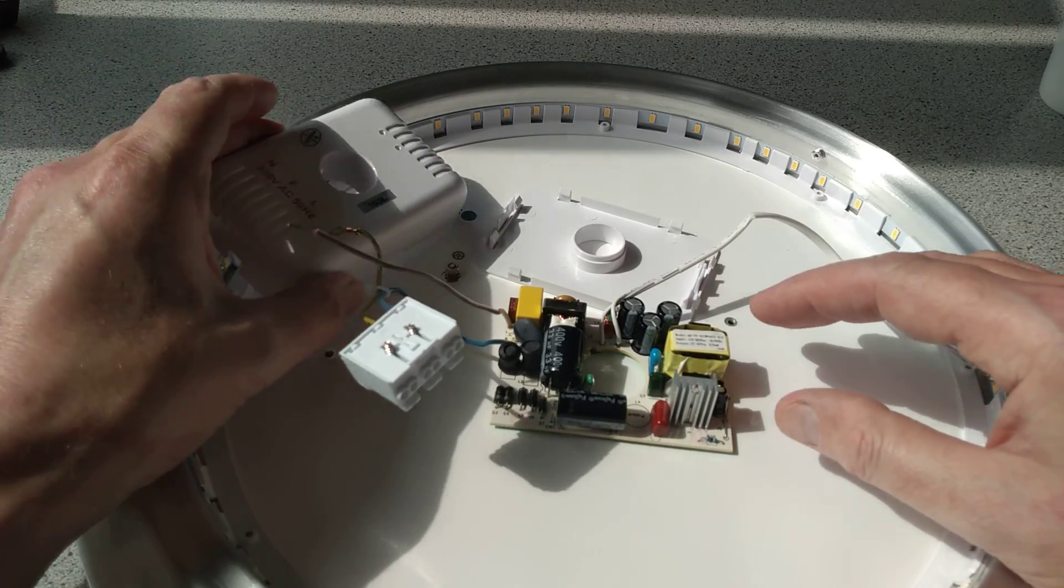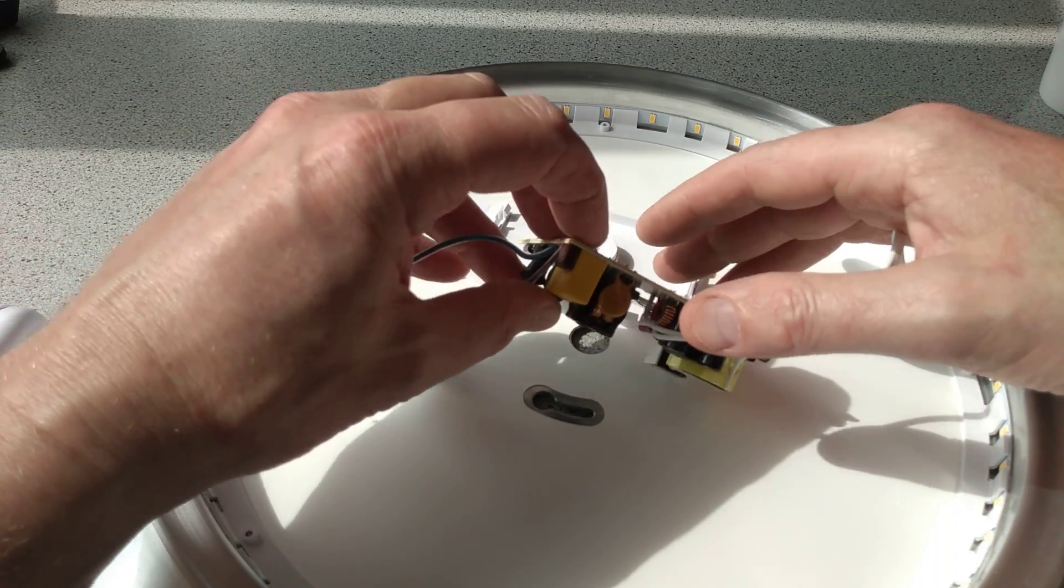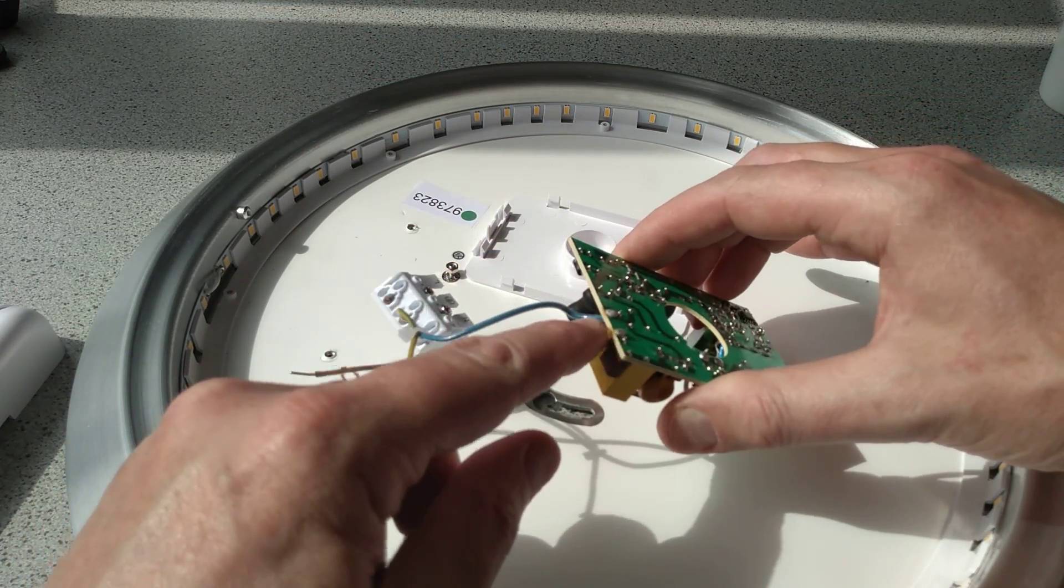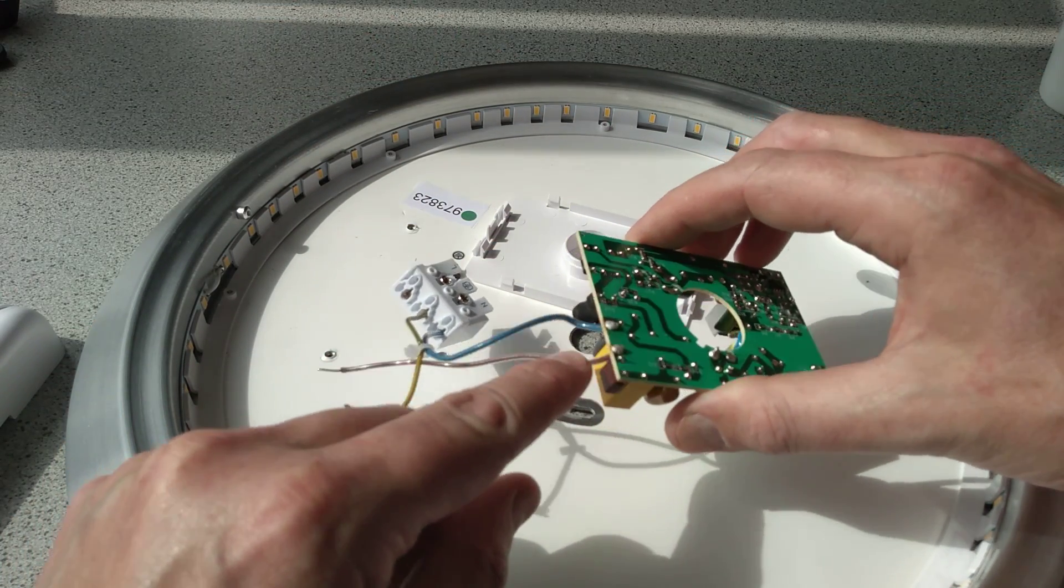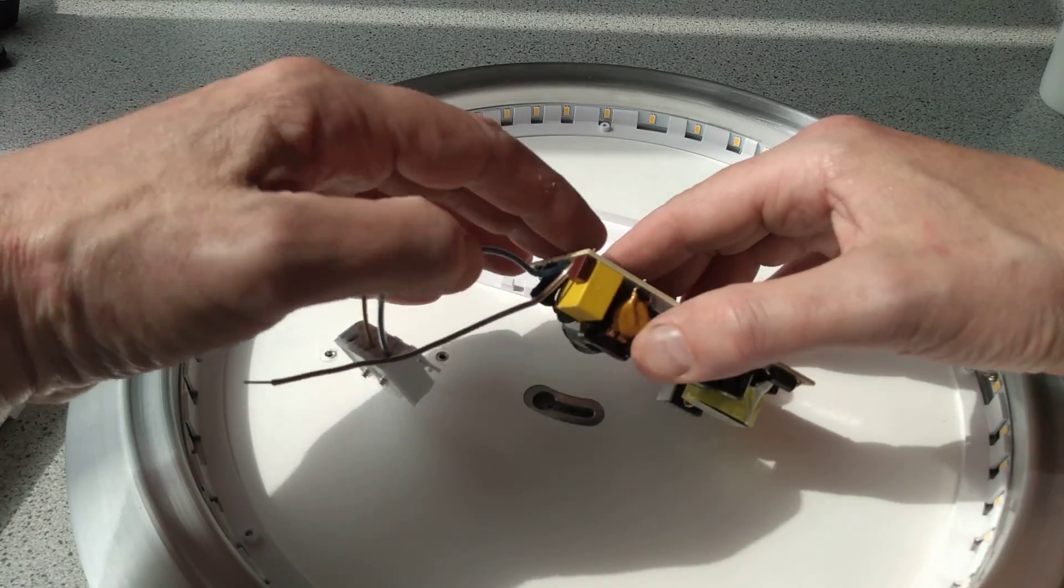So I took this down and opened it up and the problem is very simple. It's what's been causing the flickering before. The live wire here wasn't soldered in properly so I've re-soldered them both. It's a rather crusty looking solder. I think it's lead free.